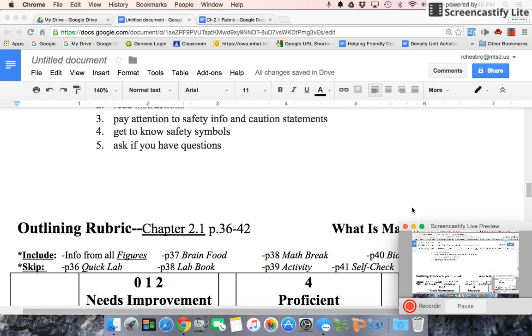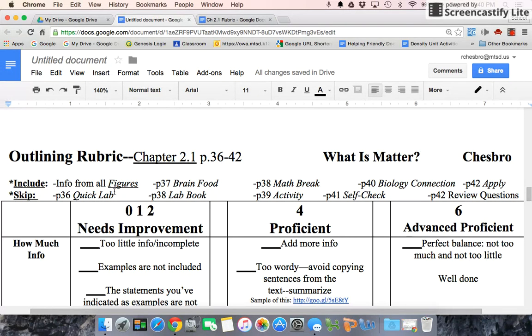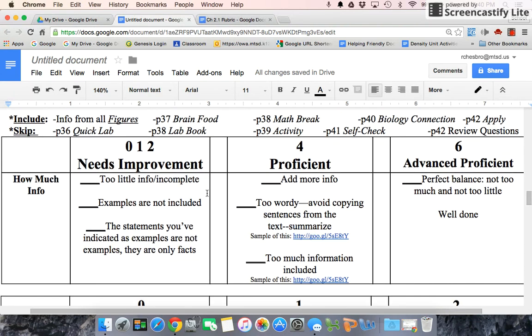Let's look at the rubric. Every rubric that I give you will have some things that you need to make sure that you include and things that you have to skip. There are three grading categories on every outline.